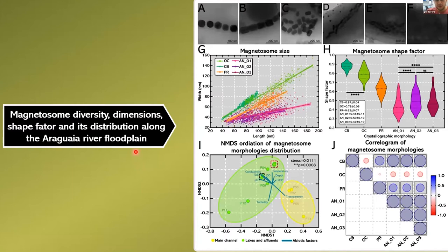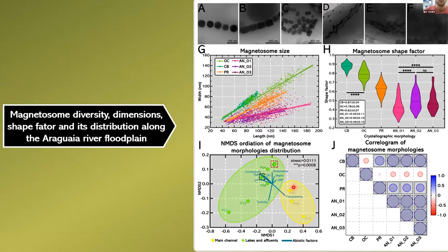We can perform statistical analysis and catalog these magnetosomes by morphology. We can predict their size using linear regression, and many fit well, but the anisotropic magnetosomes show a sigmoidal distribution rather than linear. Similarly, abiotic factors help us understand how these magnetosomes are spatially distributed, and they form narrow clusters depending on their composition.